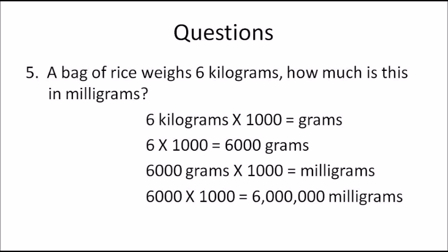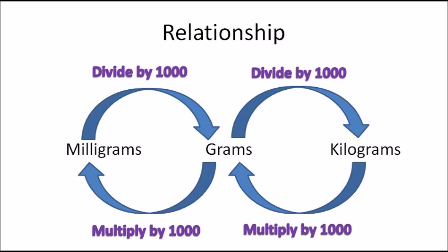Remember the relationship and the number 1000: 1000 milligrams makes one gram, and 1000 grams make one kilogram. Going from milligram to gram to kilogram — it's always divide, divide. Going from kilogram to gram to milligram — it's always multiply, multiply. It's always by 1000, because that relationship is constant and cannot be changed.